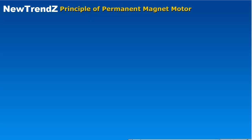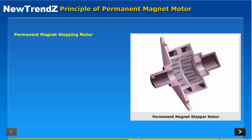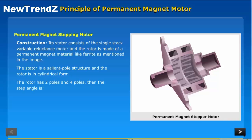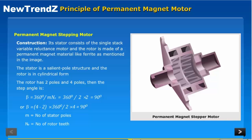Principle of Permanent Magnet Motor: The stator consists of a single stack variable reluctance motor, and the rotor is made of a permanent magnet material like ferrite. The stator is a salient pole structure and the rotor is in cylindrical form. The rotor has two poles or four poles, giving a step angle where M equals the number of stator poles and NR equals the number of rotor teeth. The cross-sectional view of the basic circuit of a stepper motor is shown for operating modes for a 90-degree step.